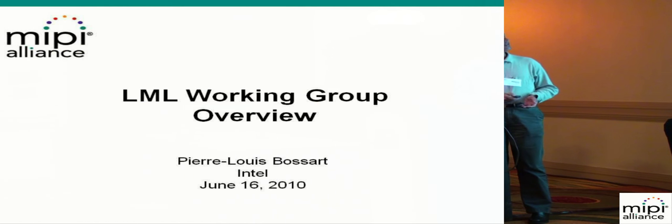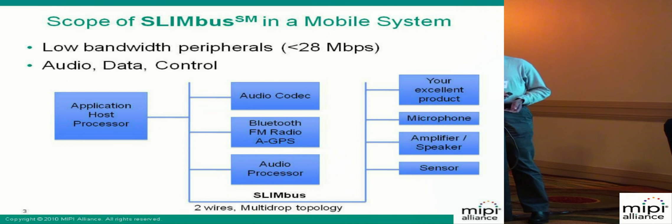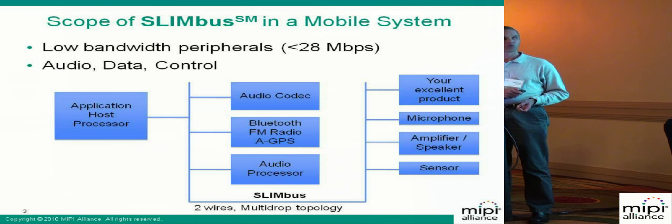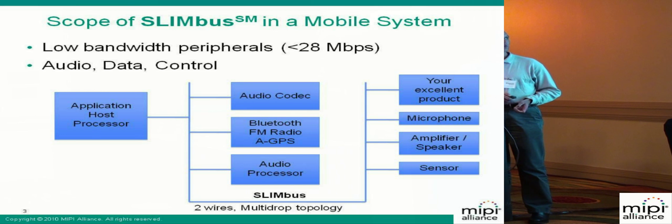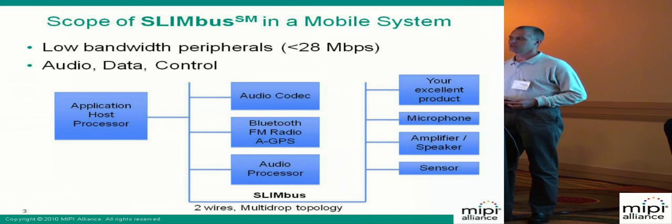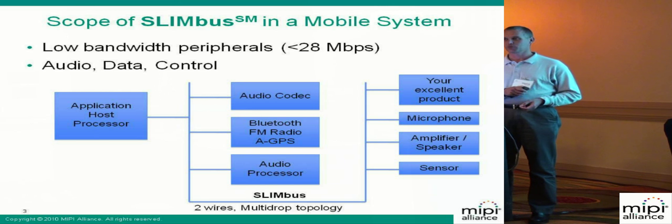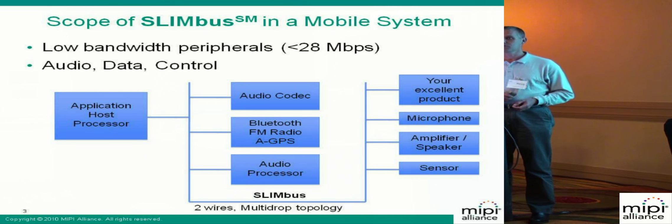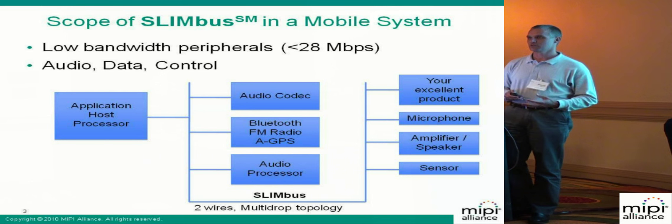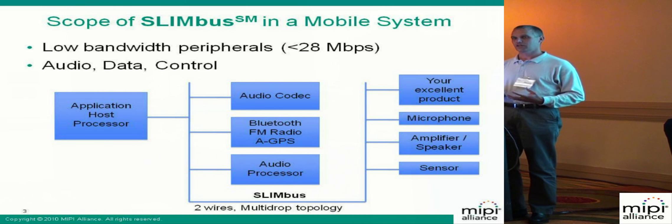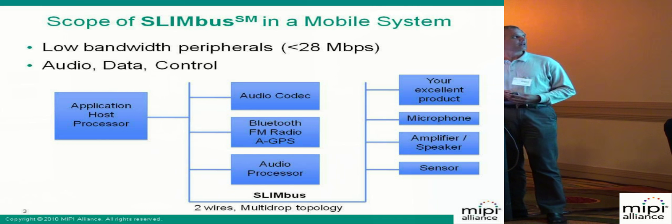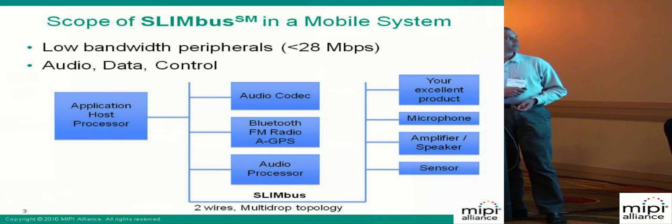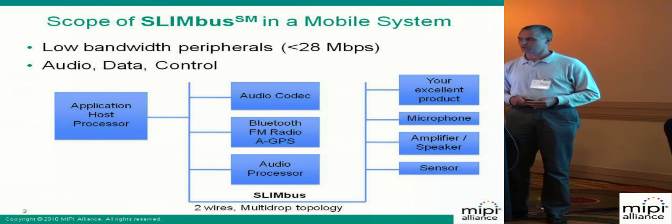So what are we trying to do in this working group? In a mobile system today, you can have an application processor and a number of peripherals: audio codecs, Bluetooth, audio processor, microphones, and more. In most cases, they are connecting together with point-to-point connections. So every time you add a new component to your system, you have to add new interfaces that can be different, and it leads to a lot of interfaces on the application processor.